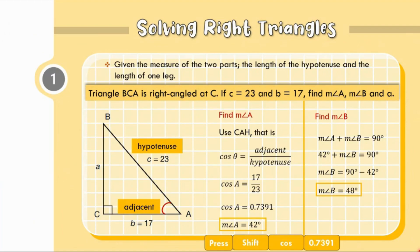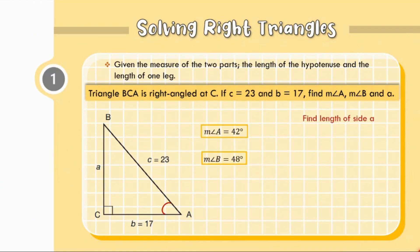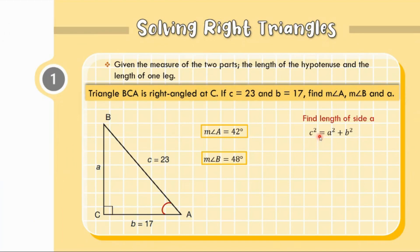For our last question in this example, let us find the length of side A. We have two ways: trigonometric ratios or Pythagorean theorem. Let us use the Pythagorean theorem. Using the formula C squared equals A squared plus B squared, where C equals 23 is the hypotenuse.